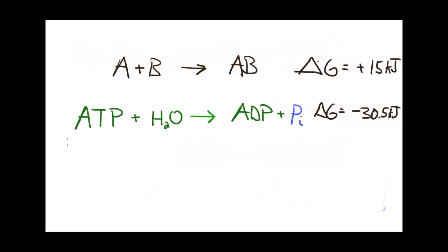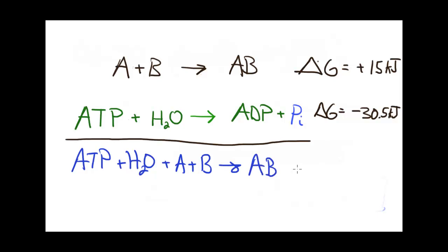I can just add these down and by doing so I get an overall reaction that looks like this, which would be ATP plus water plus A plus B goes to AB plus ADP plus phosphate.